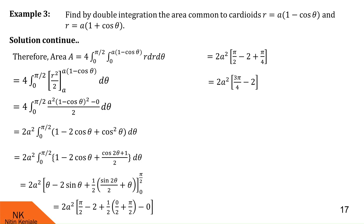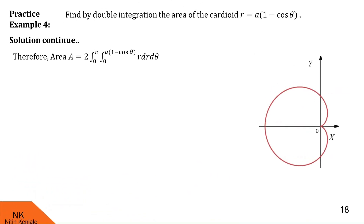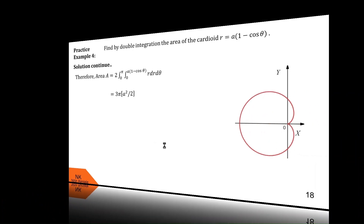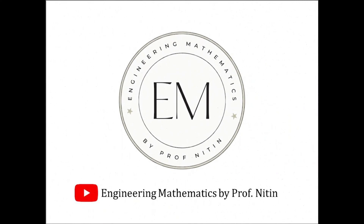Through these examples we have seen how to calculate the area of a region described in a polar coordinate system. Now it is your turn to solve examples. I have left a couple of practice examples with their final solutions so you can check your answers. Please write in the comment box whether you were able to solve them. If you liked this video, please click the like button and share it with your friends. I will be coming with more interesting concepts in upcoming videos. Thank you. Please subscribe to my YouTube channel and press the bell icon to get updates about new videos.